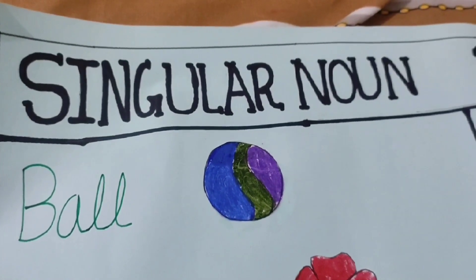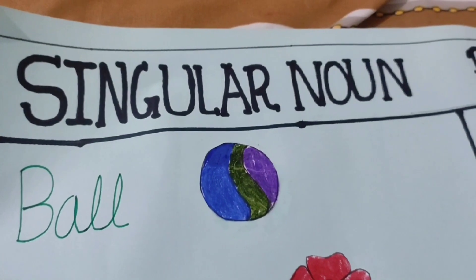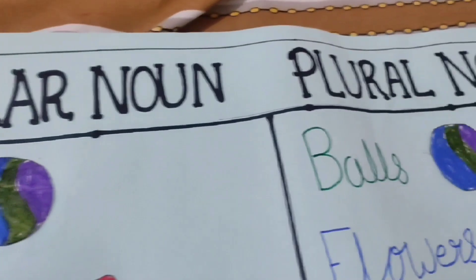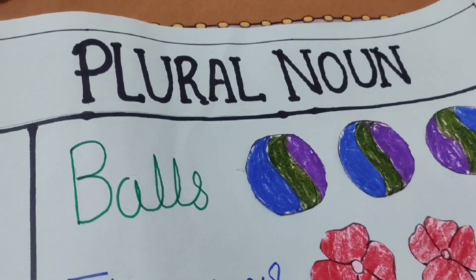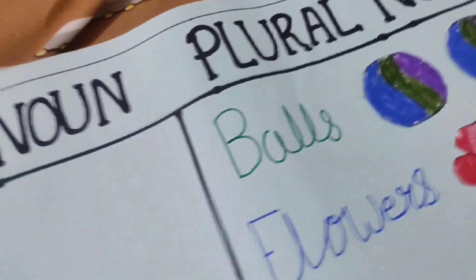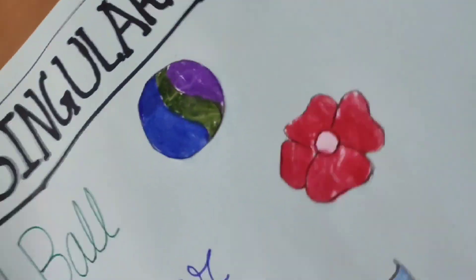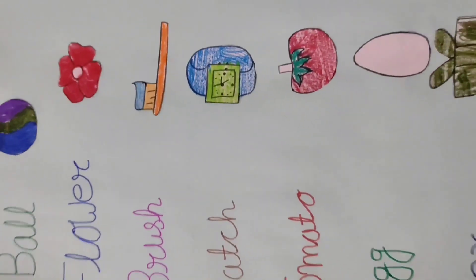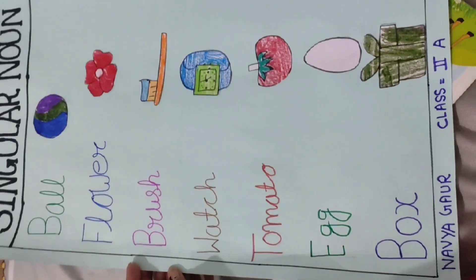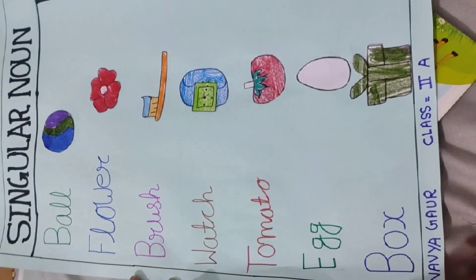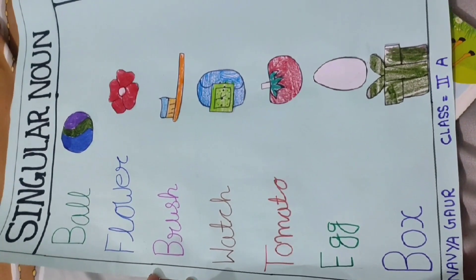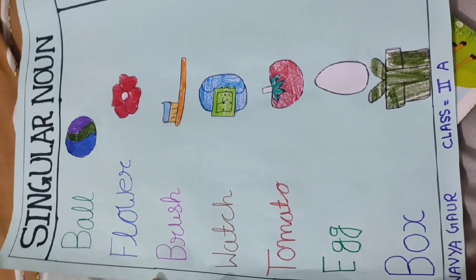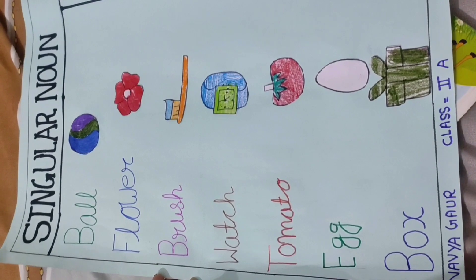Singular and plural nouns can refer to one or more than one person, animal, place, or thing. A singular noun is a noun that names one person, animal, place, or thing. For example: ball, flower, brush, watch.